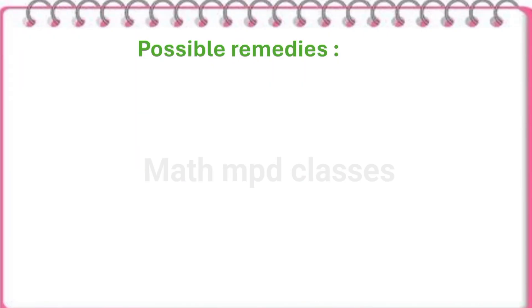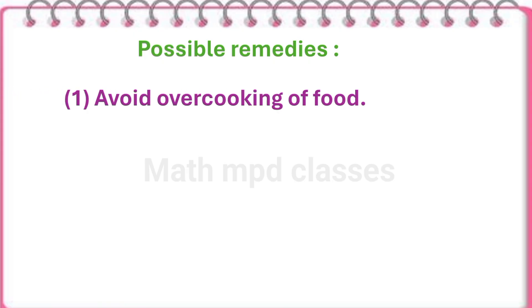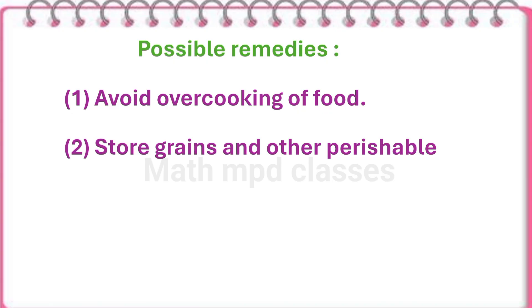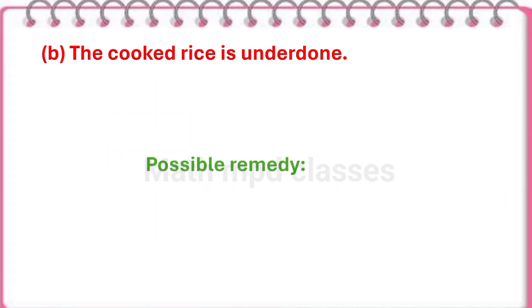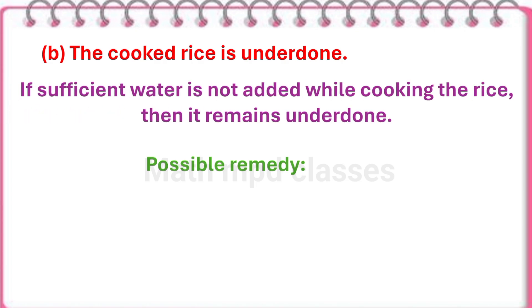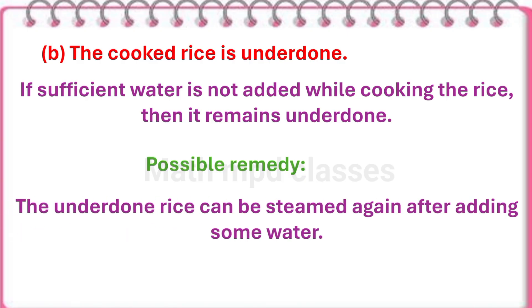Possible remedies: first, avoid overcooking of food; second, store grains and other foodstuffs properly; third, wash fruits and vegetables before cutting them. Second question: The cooked rice is underdone. If sufficient water is not added while cooking the rice, then it remains underdone. Possible remedy: the underdone rice can be steamed again after adding some water.